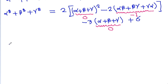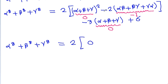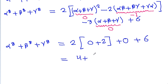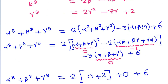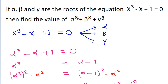Substituting: alpha² + beta² + gamma² = 0² - 2(-1) = 2. So alpha⁸ + beta⁸ + gamma⁸ = 2 times 2 - 3 times 0 + 6 = 4 + 0 + 6 = 10. Therefore, alpha⁸ + beta⁸ + gamma⁸ = 10.